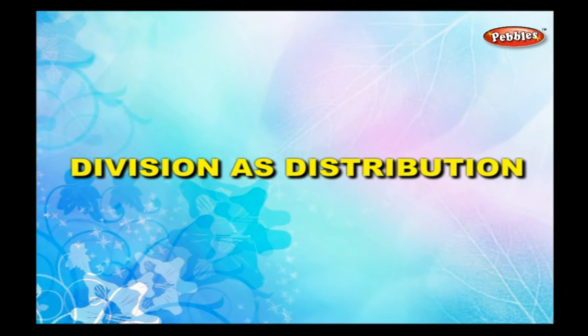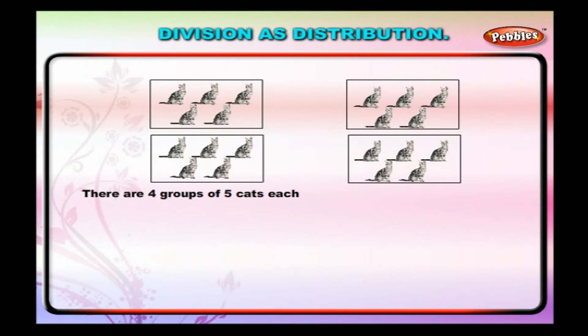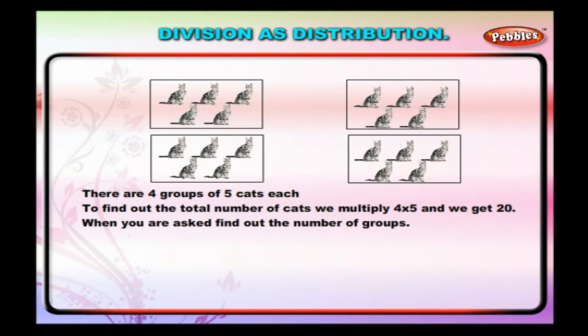Division as distribution. There are 4 groups of 5 cats each. To find out the total number of cats, we multiply 4 into 5 and we get 20. When you are asked to find out the number of groups, we use division.